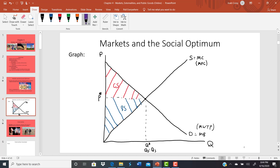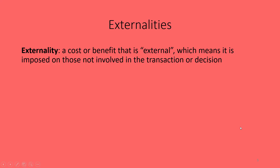Total welfare equals consumer surplus plus producer surplus. Now let's start introducing problems into this perfect social optimum — very real-world problems that make the economist's dream turn into a nightmare. An externality is a cost or benefit that is external, meaning it is imposed on those not involved in the transaction or decision.